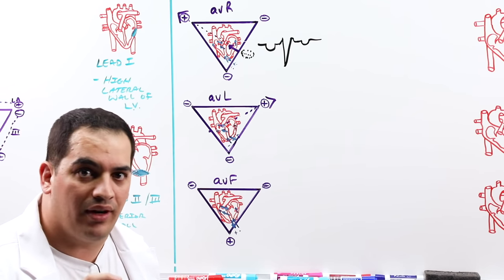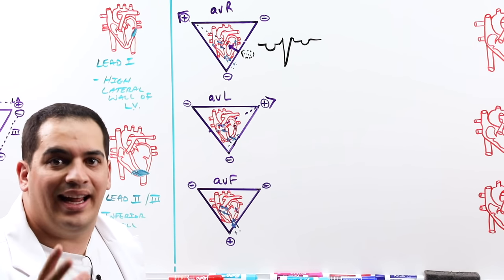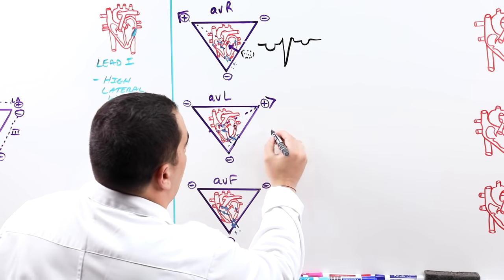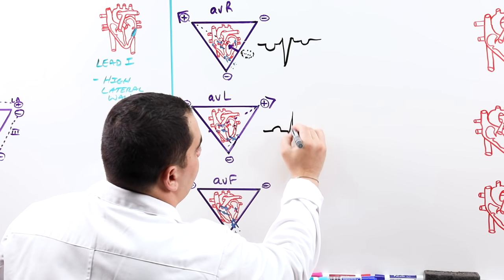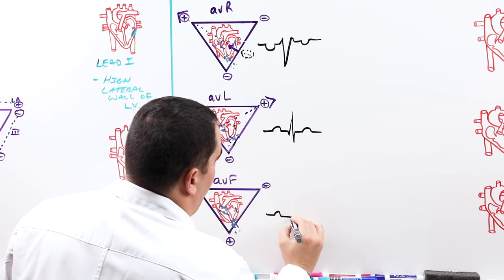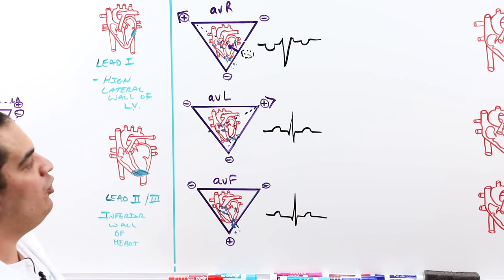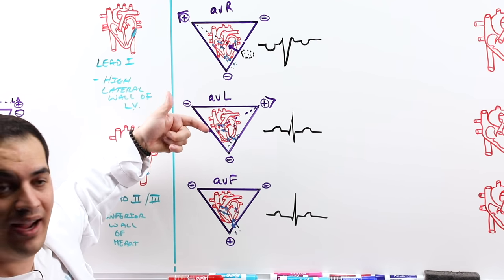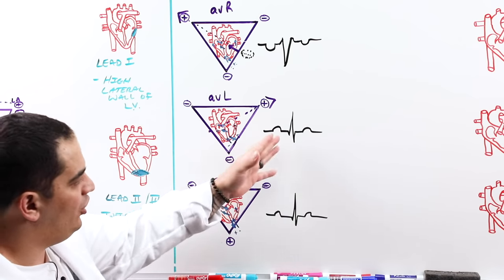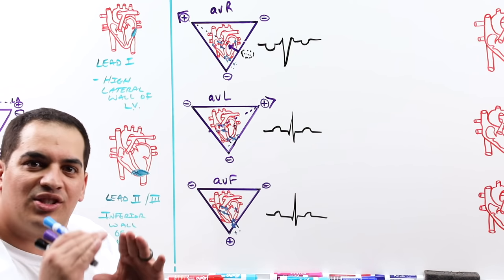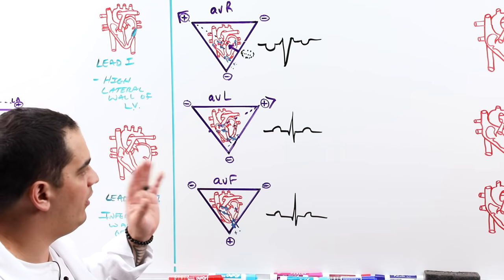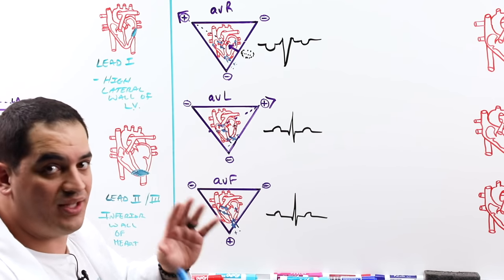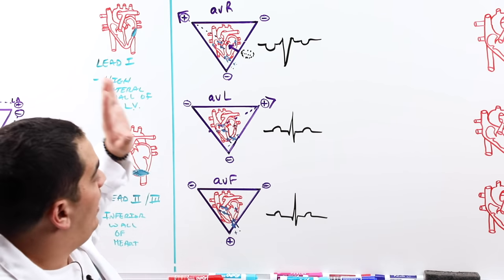So the key takeaway is: lead one, two, three, AVL, and AVF should all look pretty much the same — upright P wave, QRS, T wave. The only lead that should really look different is AVR, which is the opposite. There may be small variations, but in a perfect world those five leads look the same, with AVR being the opposite.